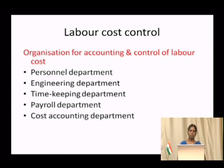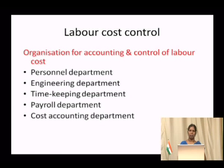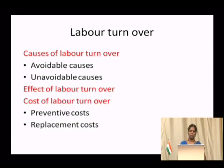Finally, the cost accounting department charges the cost of the labour to a particular job and particular activity, and determines what areas need to be controlled. Like this, labour control is in charge of five departments in any organisation. Labour is a very important component or element of the cost of the product, which is why so many departments are involved in controlling such labour cost.